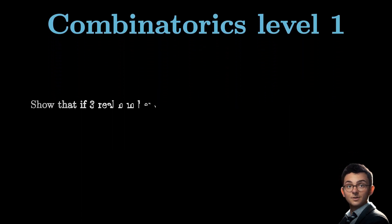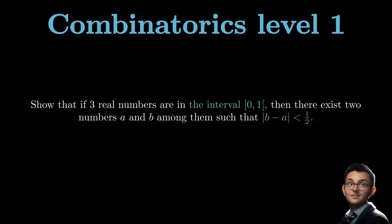Show that if 3 real numbers are in the interval [0,1], then there exist two numbers a and b among them such that |b - a| < 1/2. Feel free to take as much time as you need to reflect on the problem.